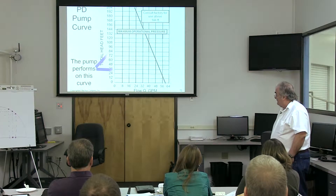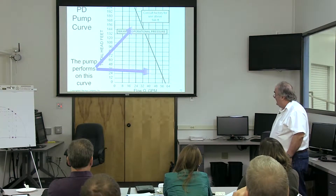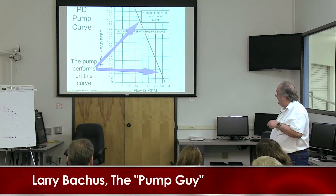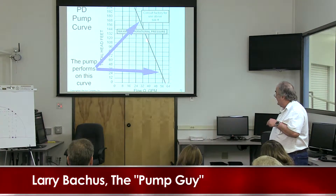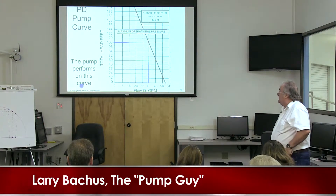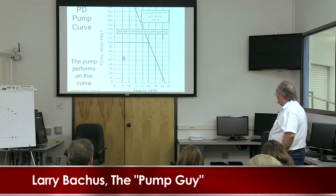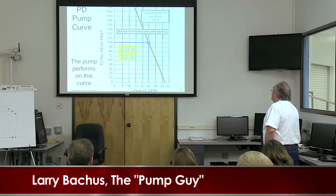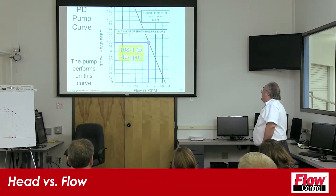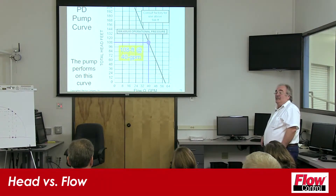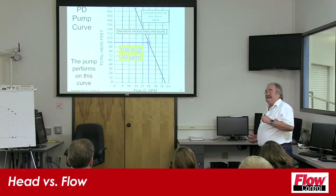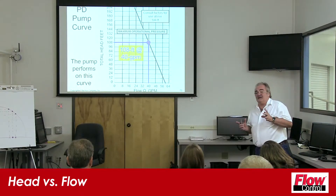The pump performs on that curve right there, and the pump moves up and down on this curve. Let's take this point on the curve: that is 108 feet at 40 gallons a minute. That's how the operator would consult his pump curve — and what is the 40 gallons? Because we need to complete some action at 40 gallons a minute.